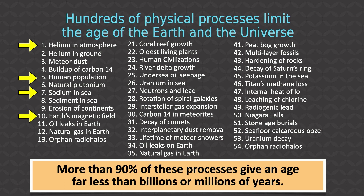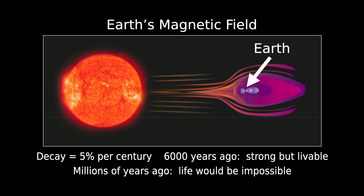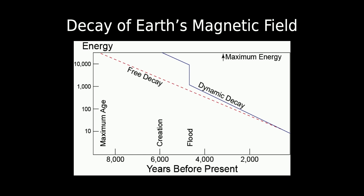We could also look at the Earth's magnetic field, which protects us from solar radiation and is known to be decaying at about 5% per century. 6,000 years ago on the biblical timescale, the magnetic field would have been strong but livable. If the Earth is really millions of years old, life would have been impossible at a much stronger magnetic field. In a dynamic decay model, the catastrophic flood caused rapid reversals of the magnetic field represented in the rock layers, fitting the 6,000-year age the Bible describes.